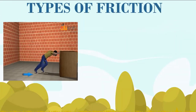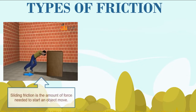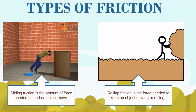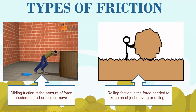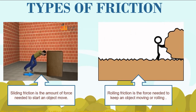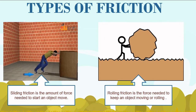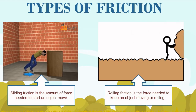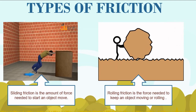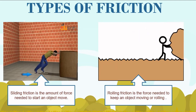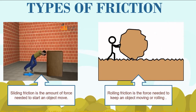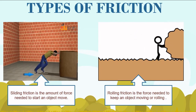We have here the two types of friction: sliding friction and rolling friction. Sliding friction is the amount of force needed to start an object moving. When sliding friction is acting, another force must be present to keep an object moving. Rolling friction is the force needed to keep an object moving or rolling. Rolling friction prevents the motion of an object rolling along a surface.